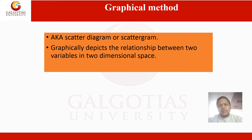There are various methods — graphical as well as numerical — to measure correlation. For the graphical method, we represent it with a diagram. For the numerical method, there are the Karl Pearson coefficient of correlation, rank correlation, and various other methods. The scatter diagram or scatter graph graphically depicts the relationship between two variables in a two-dimensional space. The vertical axis (Y axis) typically carries the dependent variable, and the horizontal axis (X axis) carries the independent variable.